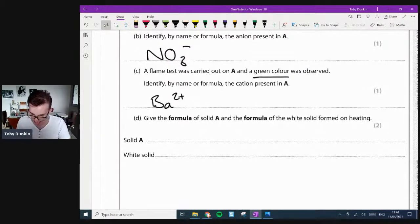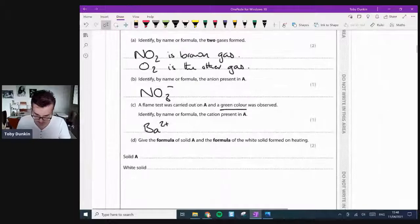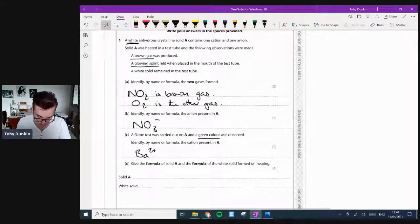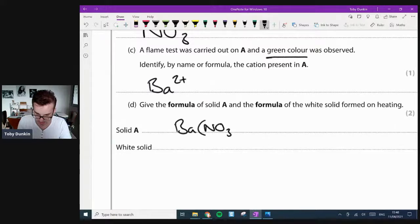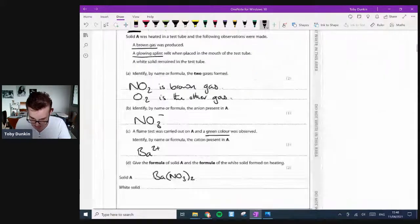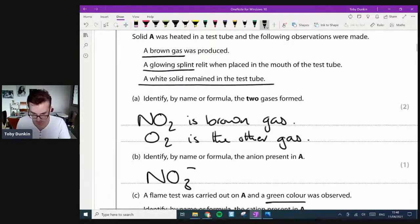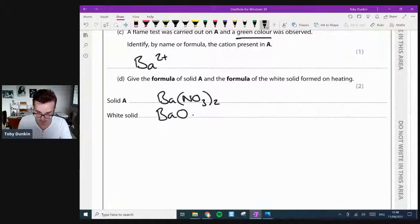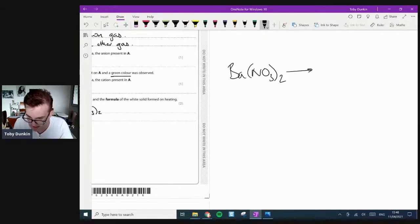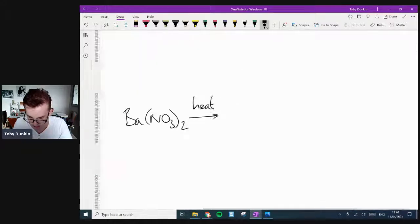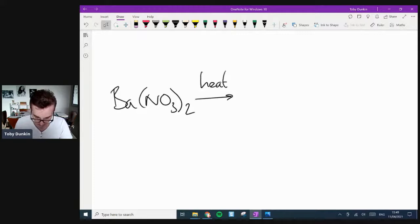This is the extension from GCSE. Whereas this is your green, a true green. This is barium. So the identification of this ion is barium two plus. Now that's actually quite interesting because barium nitrate is the most stable of the group two nitrates. So I've got a doubt in my mind there, but still. Give the formula of solid A. So this is barium nitrate.